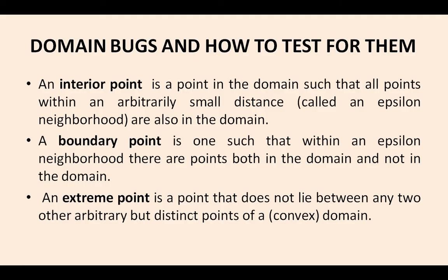Now, domain bugs and how to test for them. Normally we have multiple types of points. Number one is the interior point — a point in the domain such that all points within an arbitrarily small distance are also in the domain. A boundary point is a point which lies on that particular domain boundary. An extreme point is a point that does not lie between any two distinct arbitrary points of a convex domain.